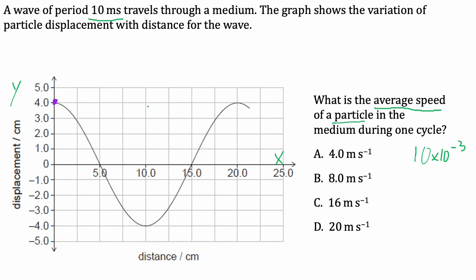And as the wave goes down, that duck or particle is going to travel all the way down here to minus 4. This is a total distance of 8 centimetres.